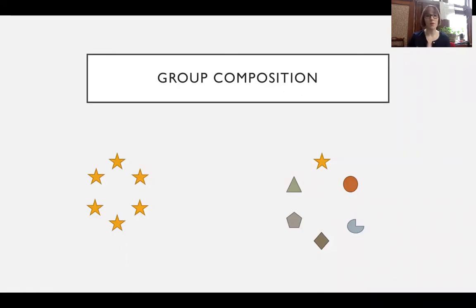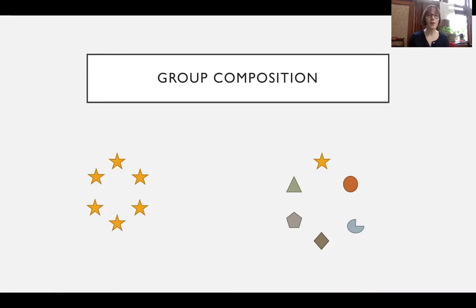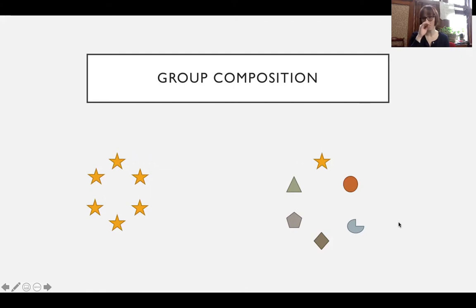That's the benefit of a homogenous group: if you need something done quickly and it requires a lot of cooperation, you might want people who are very similar so they don't have to get over that initial discomfort. That being said, heterogeneous groups are much better at complex tasks — those that require a lot of effort and creativity — because when you bring together different people, they can capitalize on their differences to come up with creative solutions. When you have a homogenous group, you may end up with very similar ideas and solutions; while they may be cooperating well and getting something done quickly, they may not optimize the solution. So there are pros and cons to homogenous and heterogeneous groups.